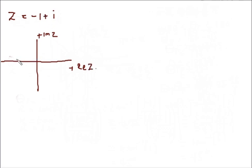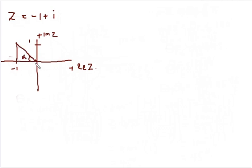Our real part of z is in the negatives, so minus 1 is around here. Our imaginary part is in the positives, so 1 is around here. These are the intersection points, and we have alpha here.